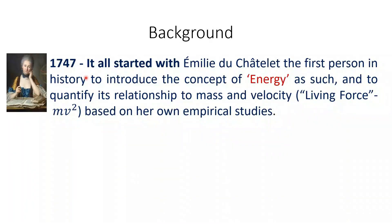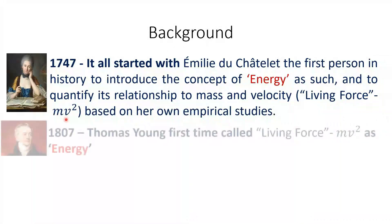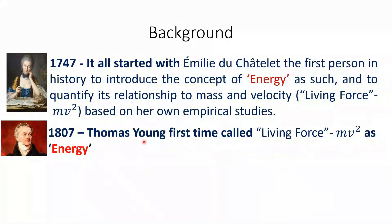The history begins in 1747 with Émilie du Châtelet, the first person in history to include the concept of energy — not by that name — and to quantify its relationship to mass and velocity. At the time it was called a 'living force.' She defined it as mv² based on her own empirical studies. Then in 1807, Thomas Young — known for Young's double slit experiment — named this living force mv² as 'energy.'